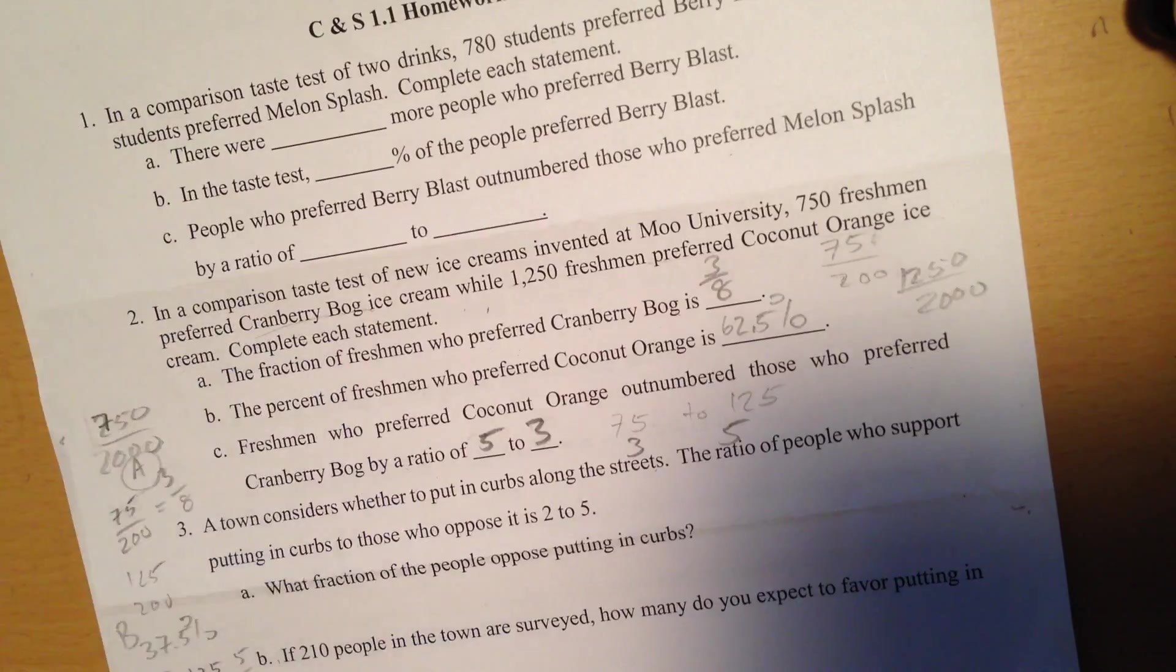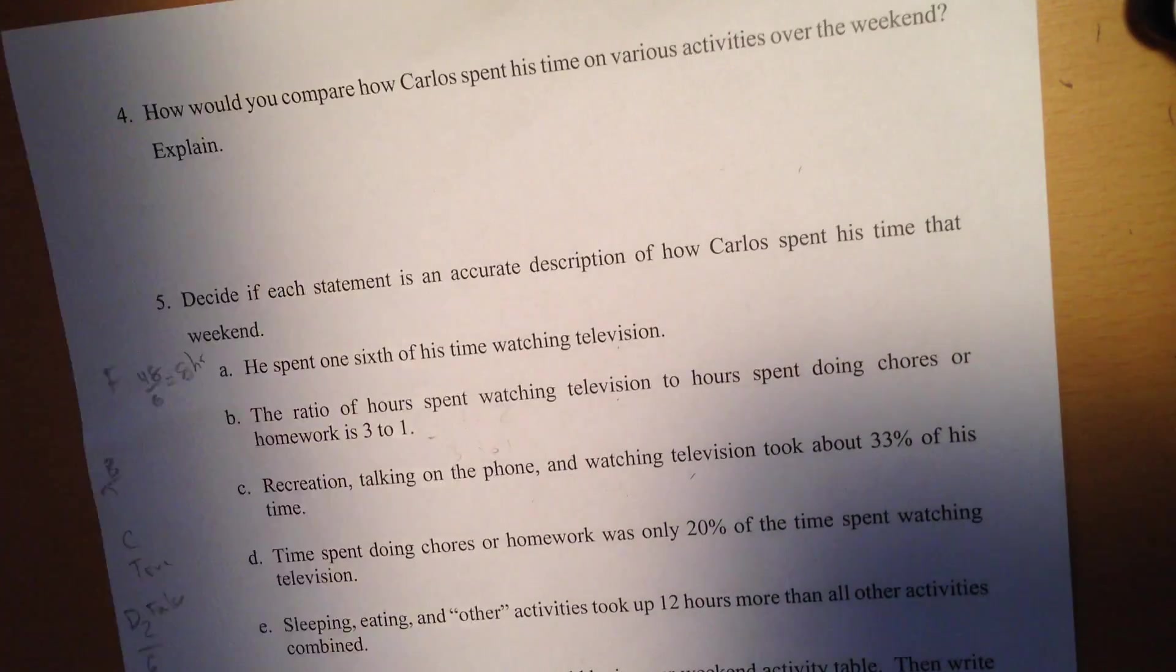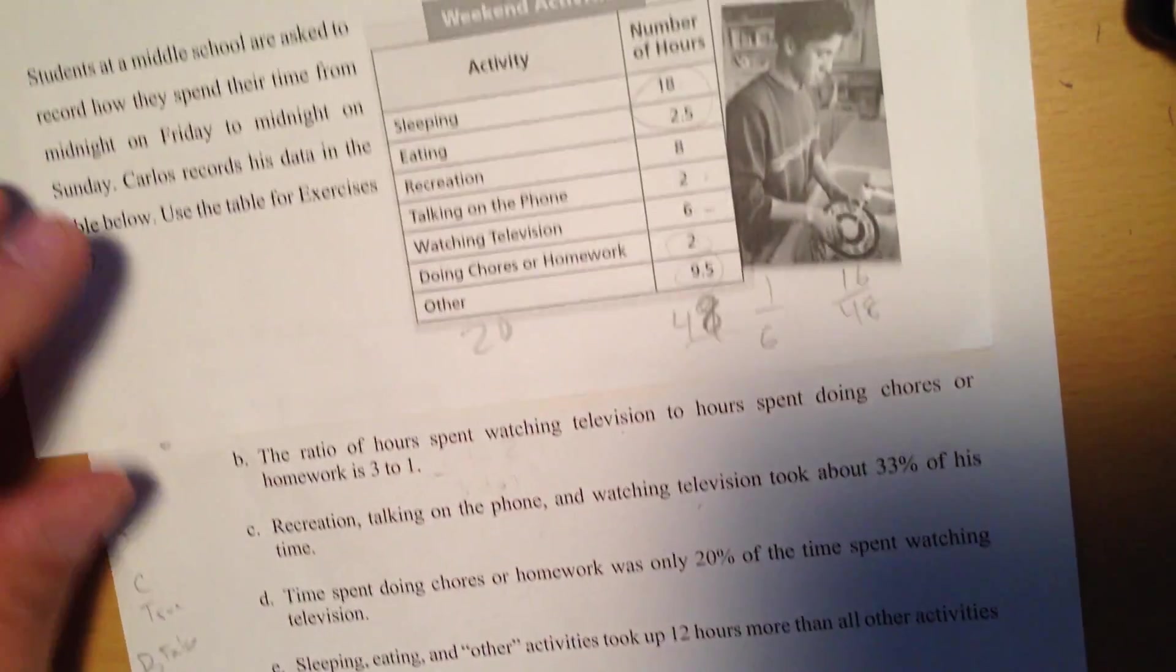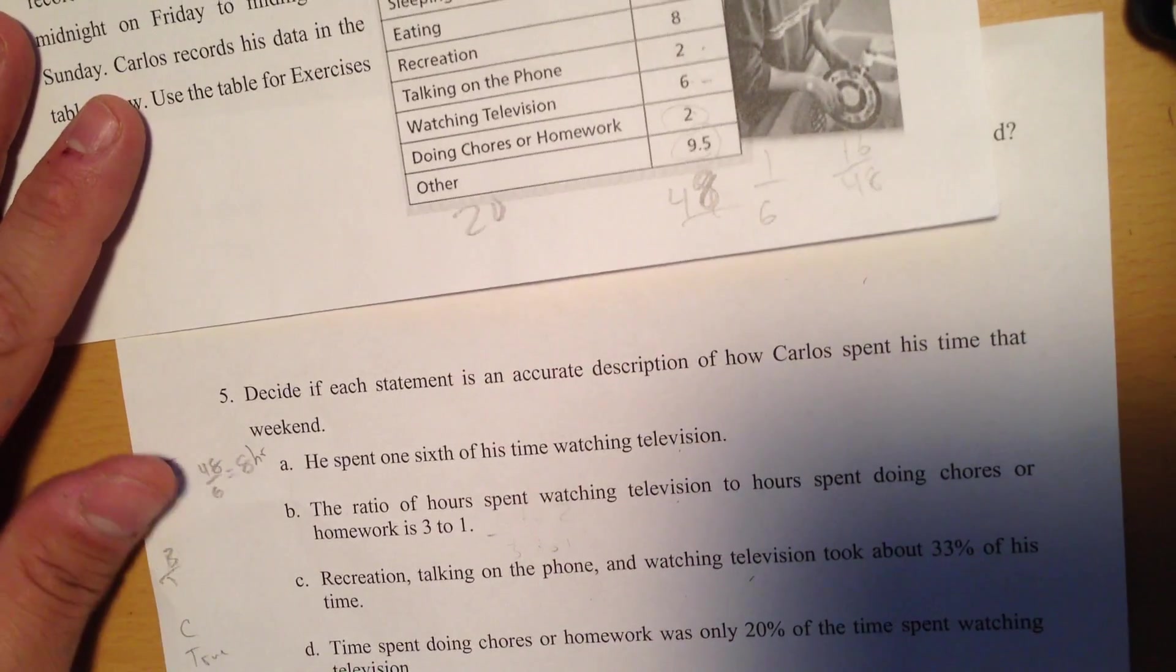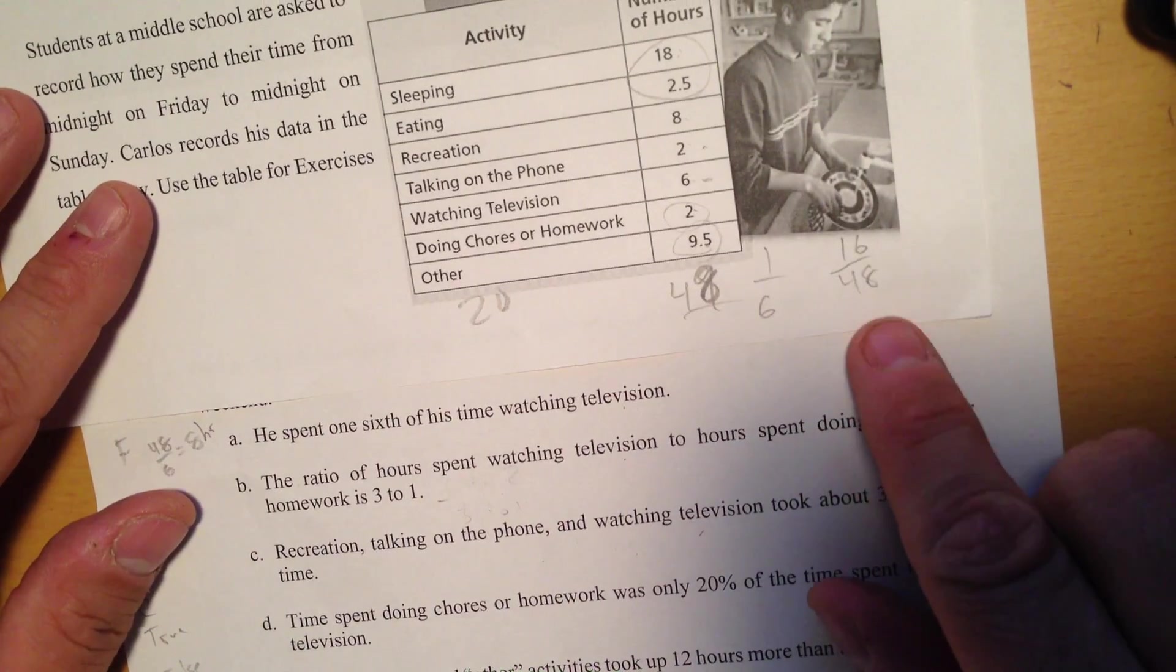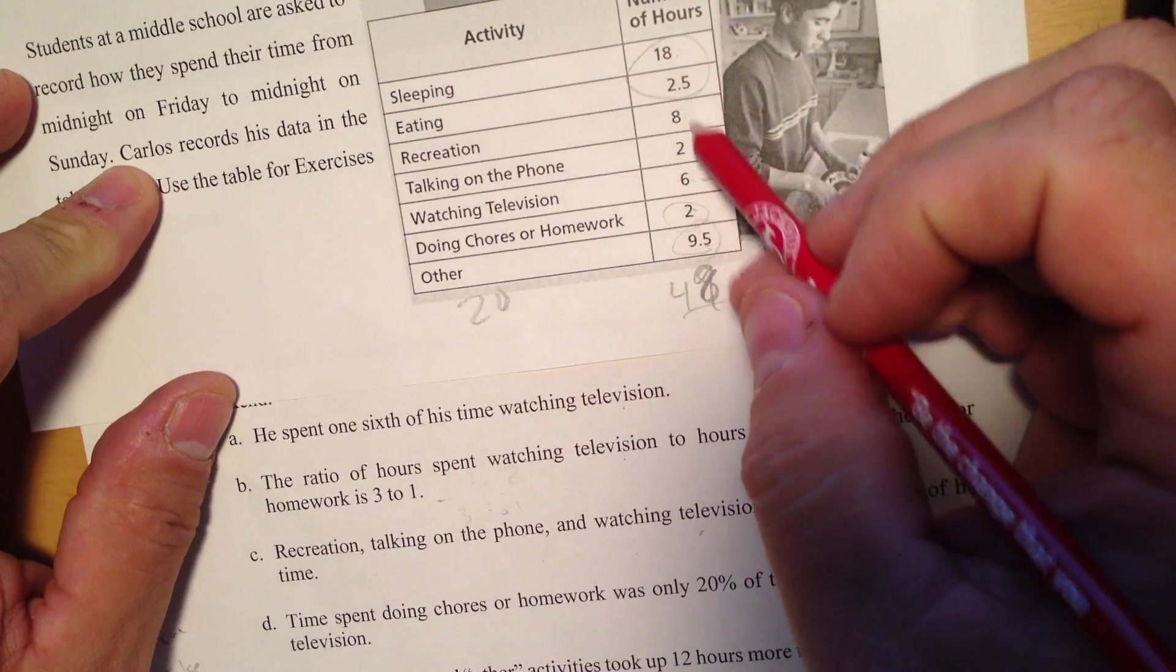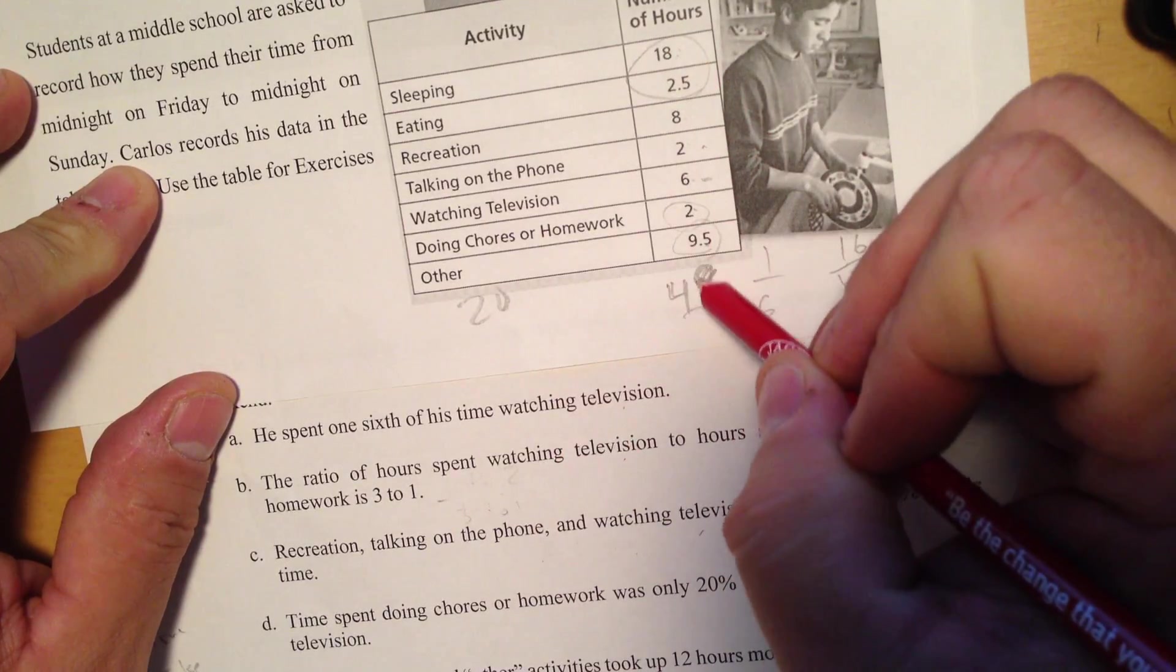Okay, so not too bad there. I also wanted to take a look at number 5, and for number 5 we had to use this table. So let's see if the statement is correct. He spent one-sixth of his time watching TV. Well, first thing I got to know is how much time he spent, and I added up, I got 48.